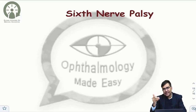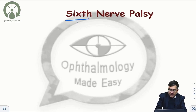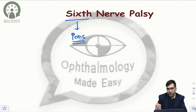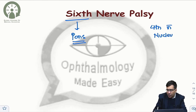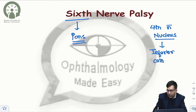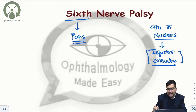Before discussing sixth nerve palsy, remember the sixth nerve: the lateral rectus nucleus is at the level of pons. Also, remember that the fourth nerve nucleus is at the level of the inferior colliculus, and the third nerve nucleus is at the level of the superior colliculus. These can come up as exam questions.